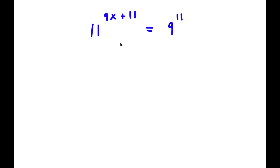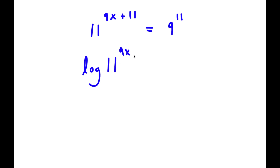In this problem I have 11 to the power of 9x plus 11 is equal to 9 to the power of 11. The first thing I'm going to do is take the log on both sides, so now I have log of 11 to the power of 9x plus 11 is equal to log of 9 to the power of 11.